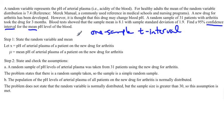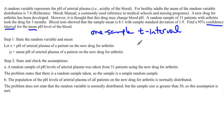Every confidence interval is done with the same process. You're going to first start off with stating the random variable and the parameter — in this case the mean. We are told the random variable is the pH of arterial plasma, but that is for anybody. Now we're looking specifically at patients on the new drug. So my random variable is the pH of arterial plasma of a patient on the new drug for arthritis, and our parameter is the mean pH of arterial plasma of a patient on this new drug for arthritis. You want to be as specific as possible to say exactly what it is you're trying to find.